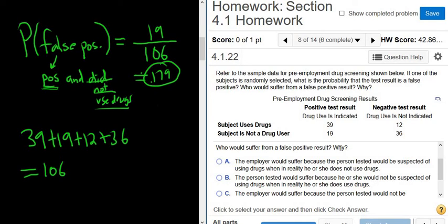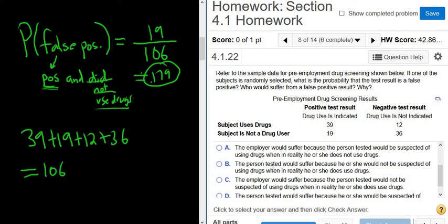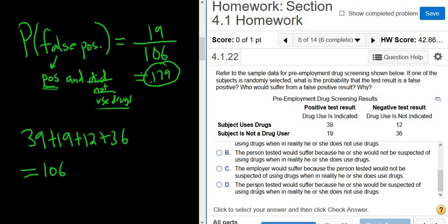Who would suffer from a false positive result? Well, I guess the person taking the drug test, right? I mean, there's almost an 18% chance that if you take this test, it's going to say you used drugs even if you didn't. So I think it's this one. The person tested would suffer because he or she, no, that's wrong, would not be, it's this one here. The person tested would suffer because he or she would be suspected of using drugs when in reality he or she does not use drugs.